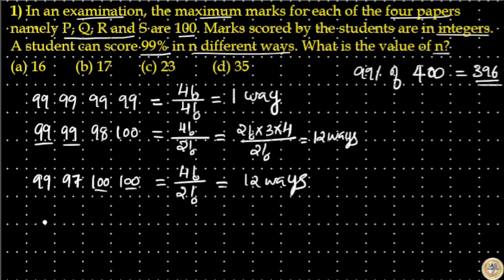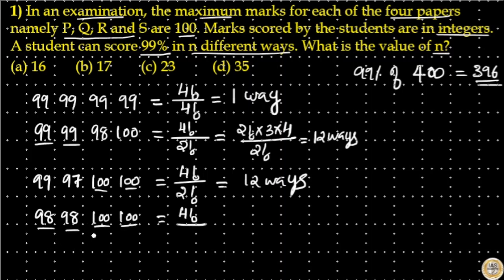If a student scored 98 in two subjects and 100 in another two subjects, that means a total of 396 marks. Total elements is 4, so 4 factorial divided by 2 factorial times 2 factorial (since 100 is repeated two times and 98 is repeated two times). That equals 2 factorial times 3 times 4 divided by 2 factorial times 1 times 2, which is equal to 6 ways.